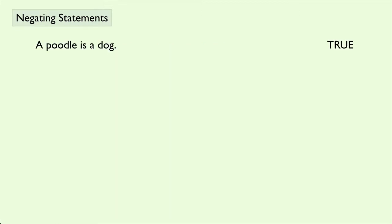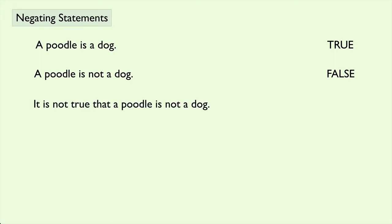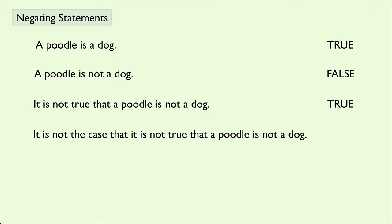A poodle is a dog — we could say that is true. Then if we said a poodle is not a dog, that would switch to false. But if we wanted to switch it back to true, we could say it is not true that a poodle is not a dog. It starts to get very wordy as you tack on all these extra words for the negation. If you wanted to negate a poodle is not a dog, you could just switch it back to a poodle is a dog — that's a much cleaner way of doing it.